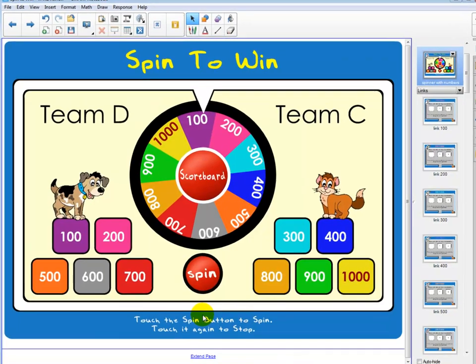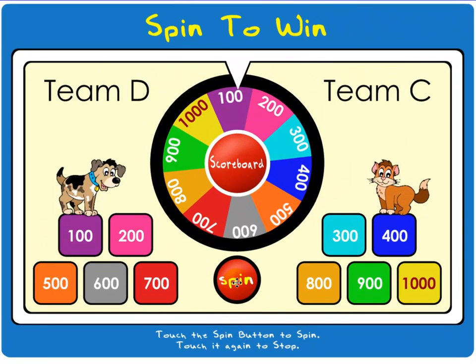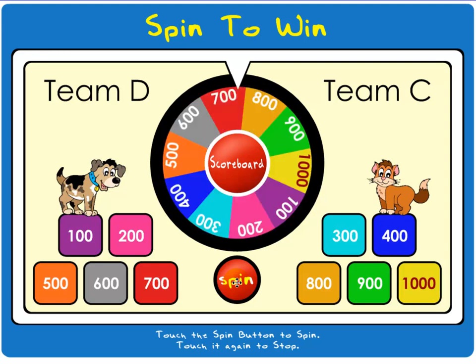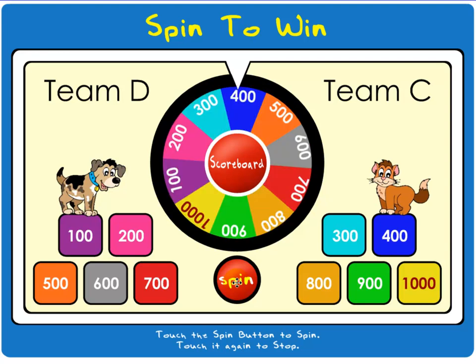To use the spin to win game, students would touch on the spin button and then when they're ready, they would touch on it again to stop the spinner. In this case, the spinner landed on a 400 point question.